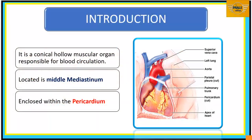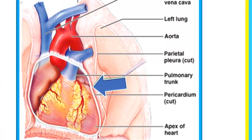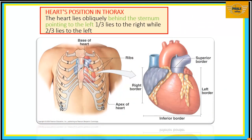The heart is a conical, hollow muscular organ that is responsible for circulation. We find it in the middle mediastinum and it is wrapped within the pericardium. Here is the pericardium, and within it is the heart. It will be good for us to understand how it is located within the middle mediastinum.